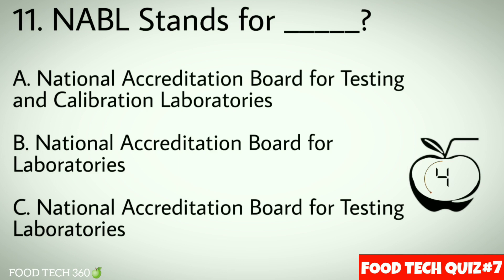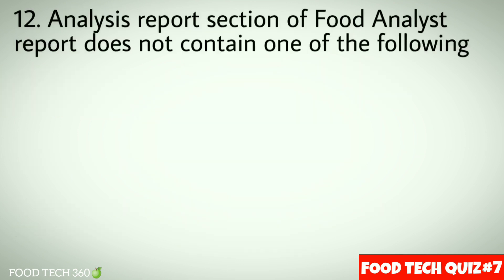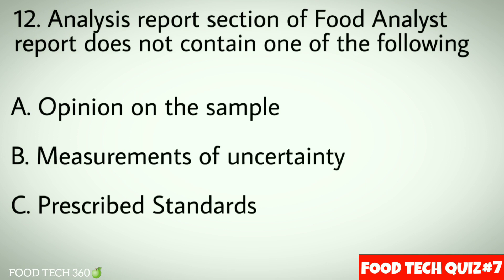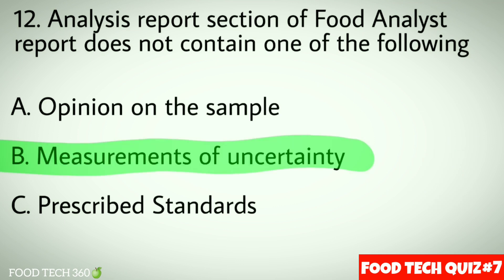Question number 12: The analysis report section of a food analyst report does not contain one of the following — options: a) Opinion on the sample, b) Measurement of uncertainty, c) Prescribed standards. Correct answer: b) Measurement of uncertainty.